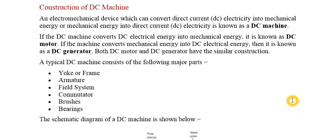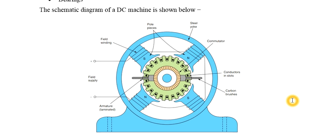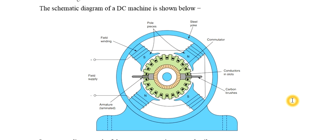The main components of a DC machine are: yoke, armature, field system, commutator, brushes, and bearings. The yoke is the outer frame of the machine.